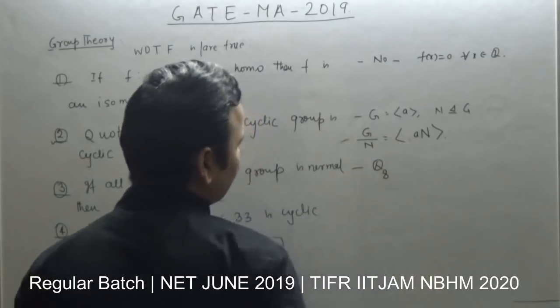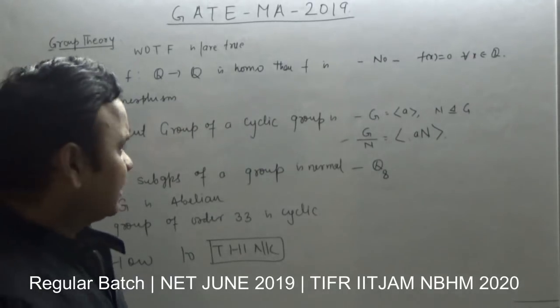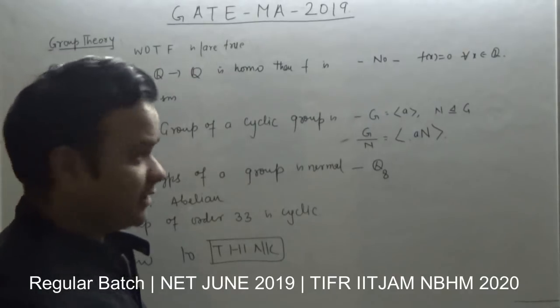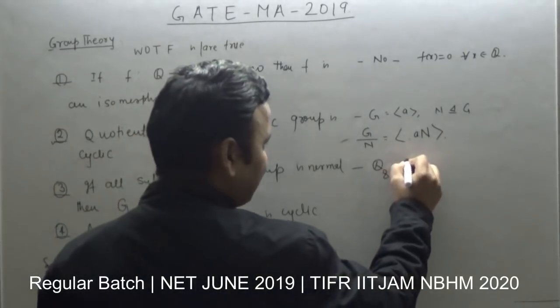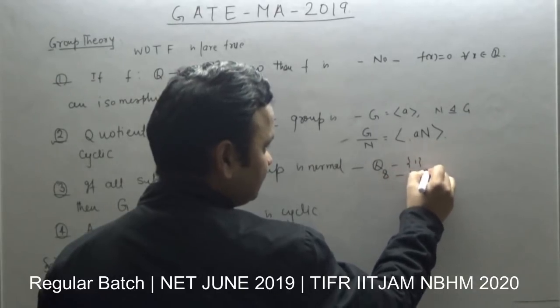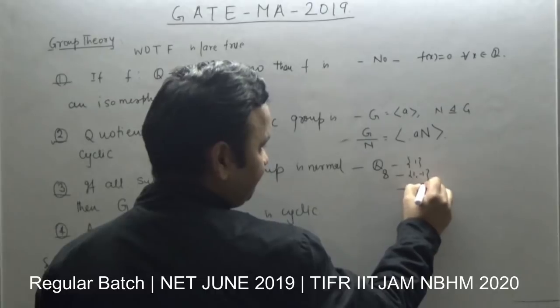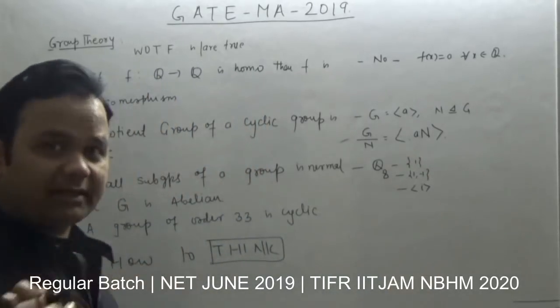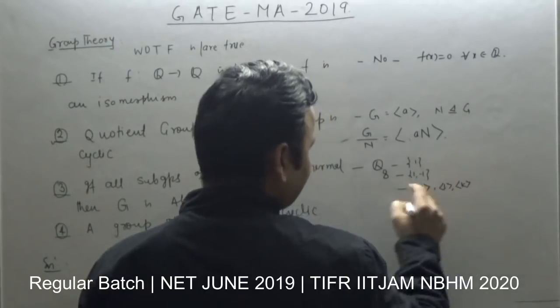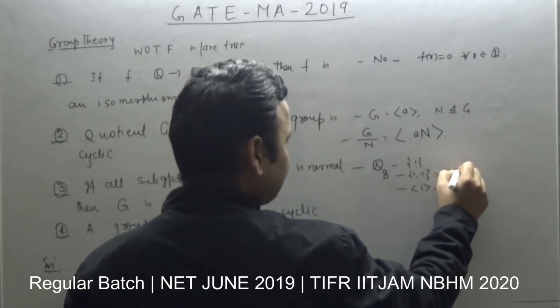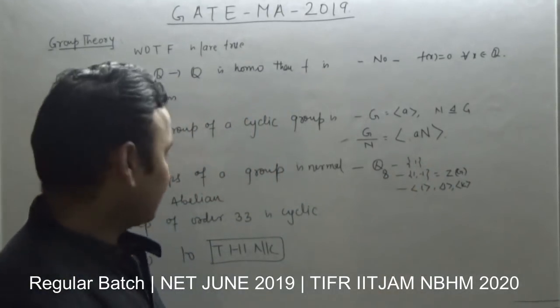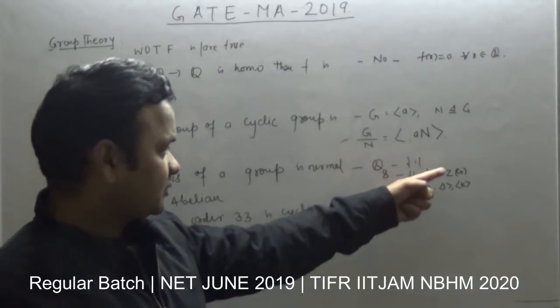Look at Q8. Q8 is an example of a group where all subgroups are normal. One is the identity, then two order subgroups, and then four order subgroups generated by i, generated by j, generated by k.